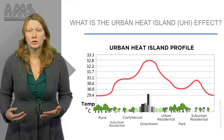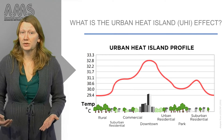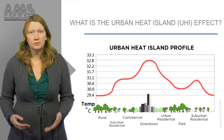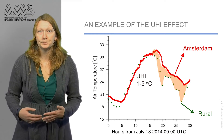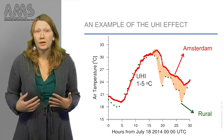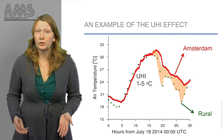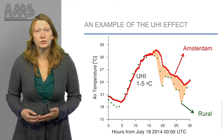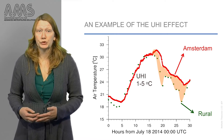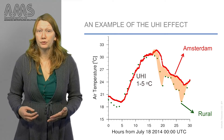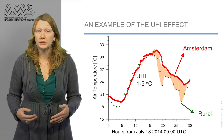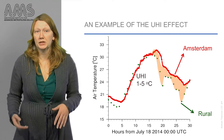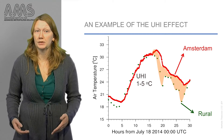The urban heat island phenomenon is present in most urban areas, even in small villages. This is an example of the urban heat island in Amsterdam. In green you see the air temperature of the rural weather station increasing during the morning and decreasing in the afternoon and evening.